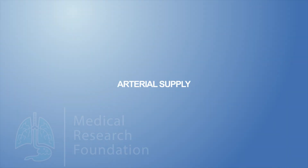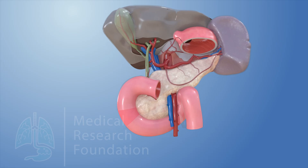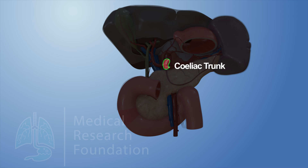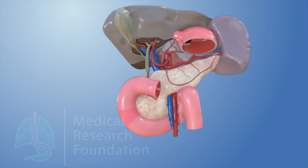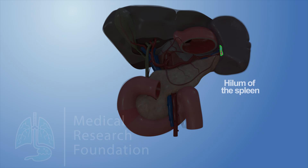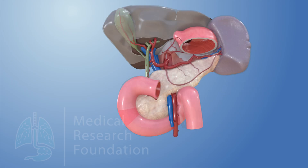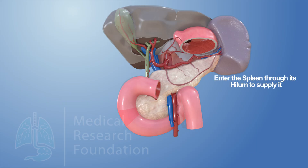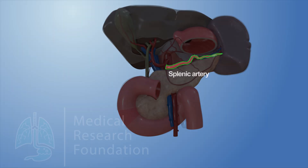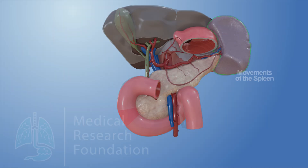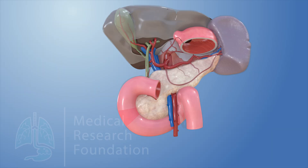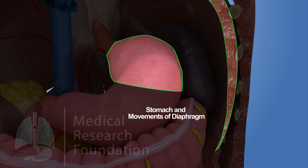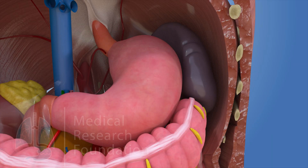The spleen is supplied by the splenic artery, the largest branch of the celiac trunk. It traverses through the lienorenal ligament to reach near the hilum of the spleen, where it divides into five or more branches which enter the spleen through its hilum. The splenic artery is remarkably tortuous to allow movements of the spleen following distention of the stomach and movements of the diaphragm without obstruction to the blood flow.